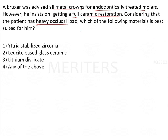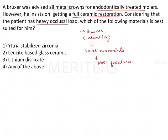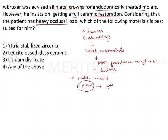In the history we have a bruxer — that means clenching — so you cannot give weak materials. Weak materials are the ones that have poor fracture toughness, fracture easily, or are very brittle. In these patients the gold standard is to give noble metal crowns. PFM has to be given with caution because porcelain will chip off due to its brittle nature.